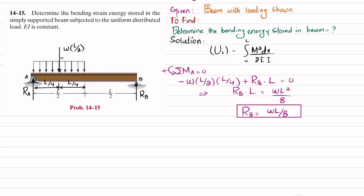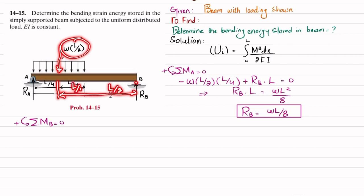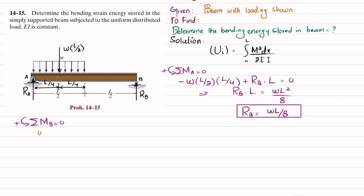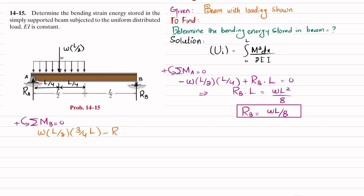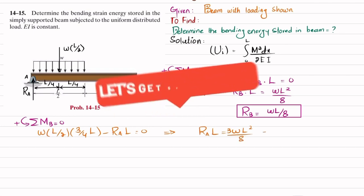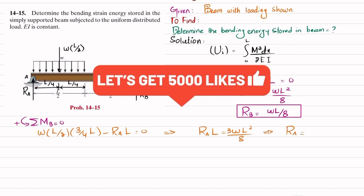Now we find R_A using sum of moments about point B equals zero, taking counterclockwise as positive. The counterclockwise moment from the distributed load is w·(L/2)·(3L/4), and the clockwise moment from R_A is R_A·L. Setting the sum to zero gives R_A·L = 3wL²/8, so R_A = 3wL/8. This is the reaction at the pin support.